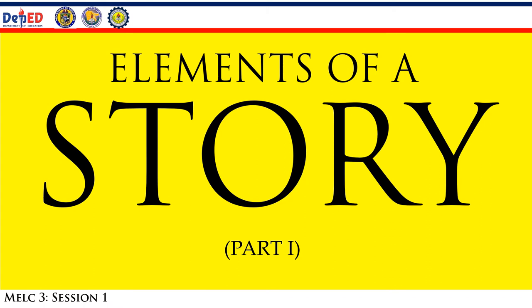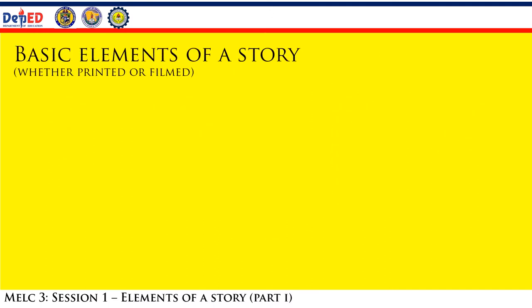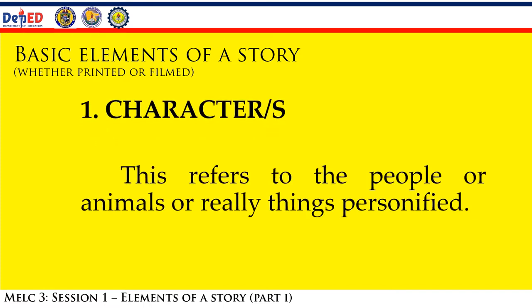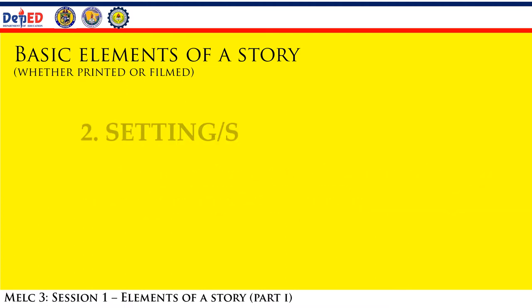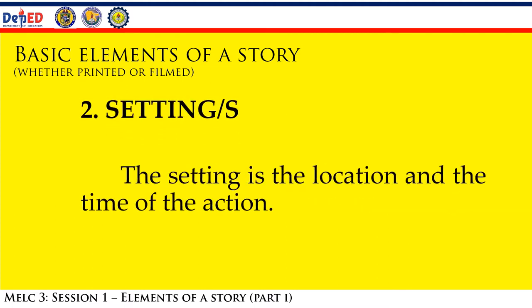So what elements make a great film? Today we'll be having the first part of the elements of the story. The first basic element of film is character or characters. This refers to the people, animals, or real things personified. There can be one main character or many, and often there are secondary characters, but not always.